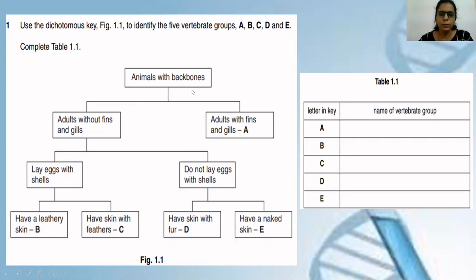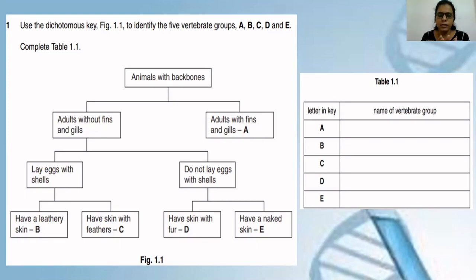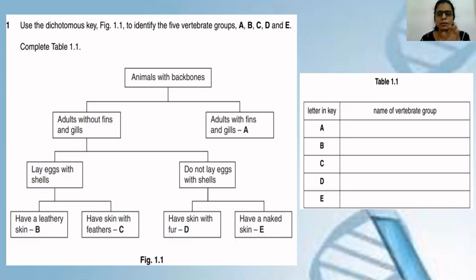Animals with backbones — all vertebrates are animals with backbones. Then: adults without gills and fins; and adults with fins and gills. The moment you read 'adults with fins and gills,' you should understand that out of these five classes, only one particular class has fins and gills — and that is class Pisces. So for A, you can write Pisces or simply write fish. Now, for adults without fins and gills — remember, you might get confused because gills are present in amphibians also, but only in the larval stage. Adult amphibians don't have gills; adult amphibians have lungs.